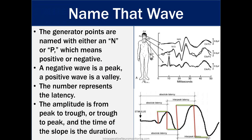Generator points are named with either N or P — negative or positive. A negative wave is a peak, and a positive wave is a valley. The number represents the latency of the wave, or how long it takes to reach that generator point. Amplitude is measured peak to trough or trough to peak, and the slope duration is the time of that slope.